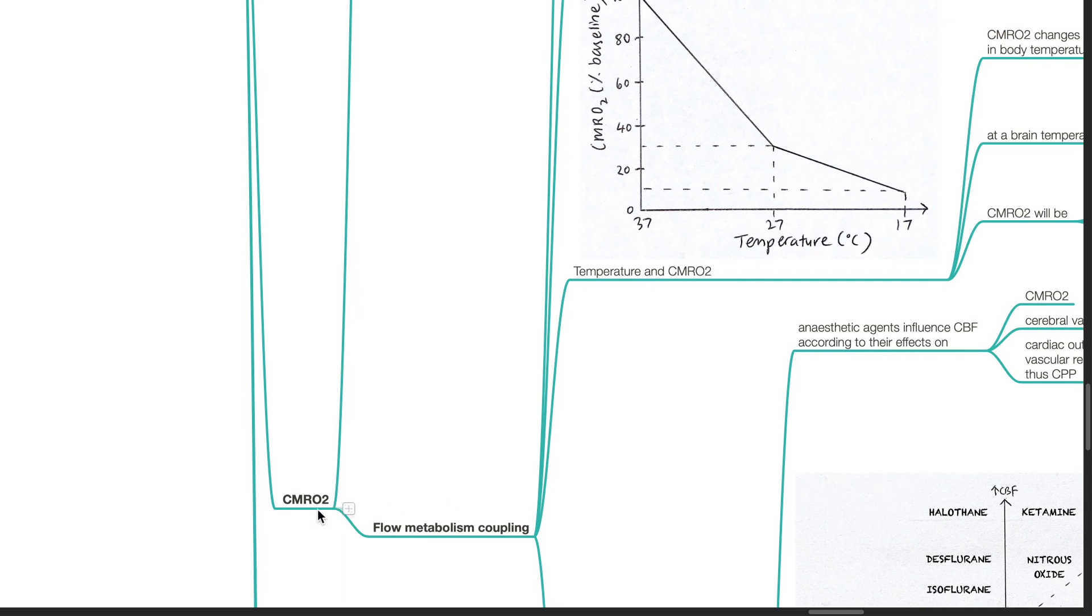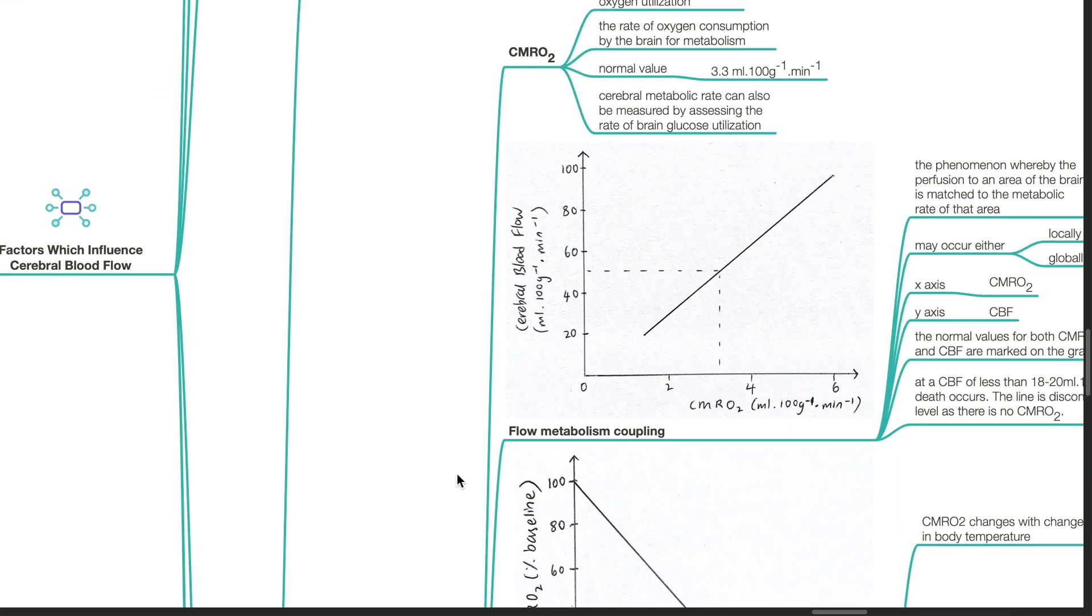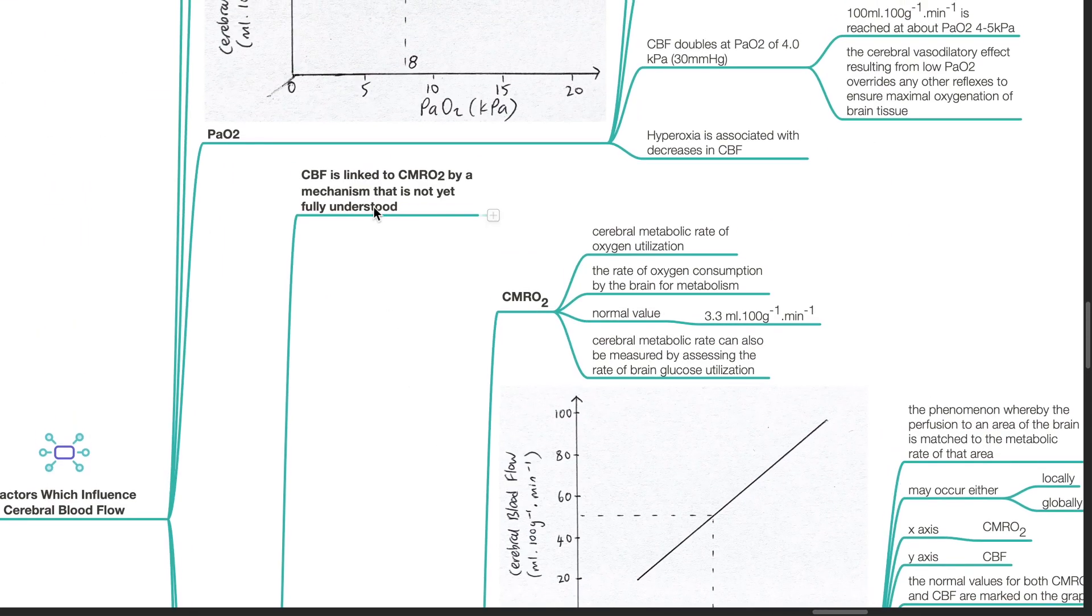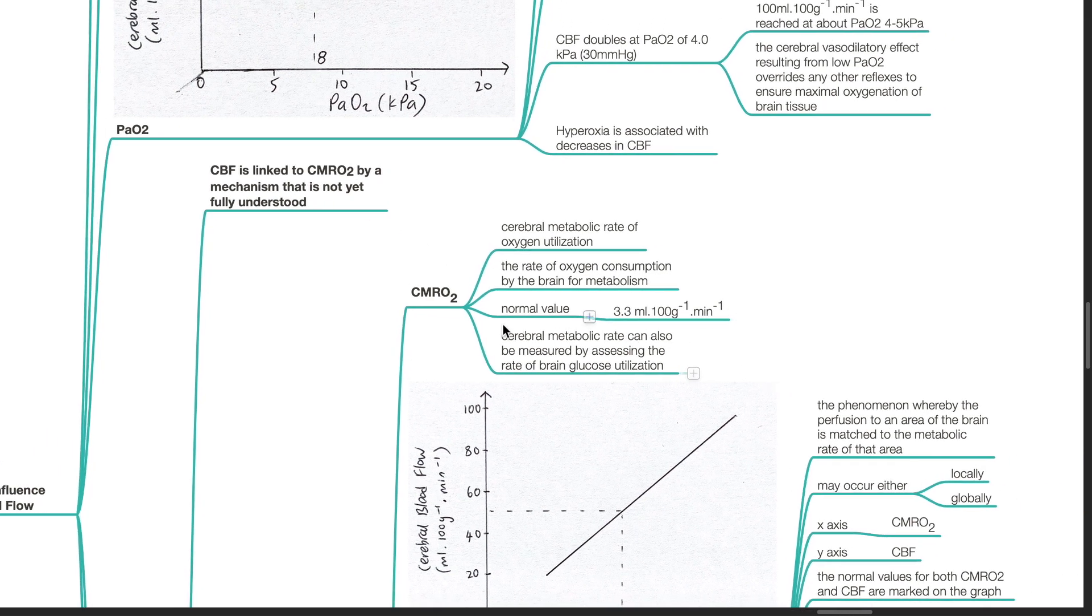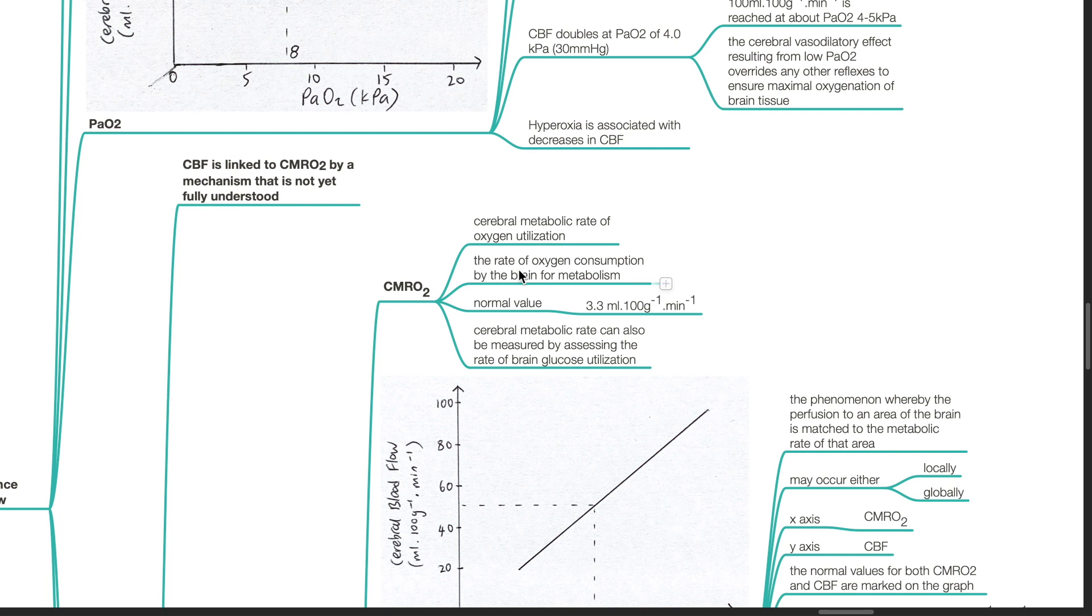CMRO2. CBF is linked to CMRO2 by a mechanism that is not yet fully understood. CMRO2 stands for cerebral metabolic rate of oxygen utilization. It refers to the rate of oxygen consumption by the brain for metabolism. Normal CMRO2 is 3.3 mL per 100 g per minute.